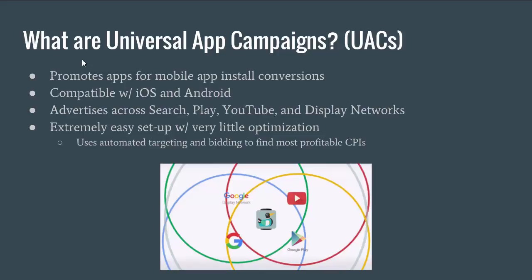UACs use automated targeting and bidding to find the most profitable cost per install, which is the main reason they're so easy to set up — everything is pretty much automated. With campaigns like search, optimizing bids takes a lot of work and knowledge of the UI. In terms of difficulty, these are probably the easiest type of campaign I've ever set up, so that is definitely an advantage.